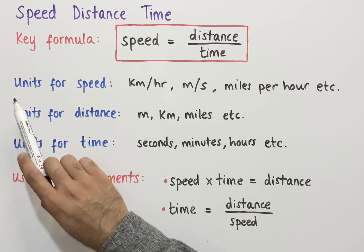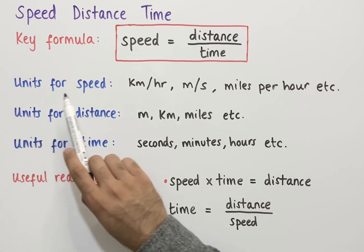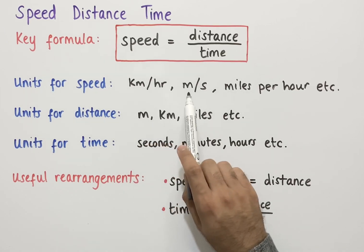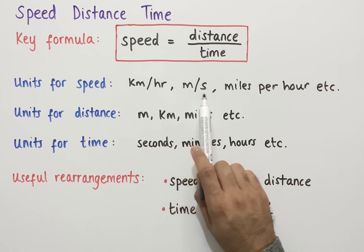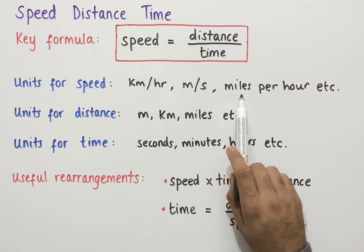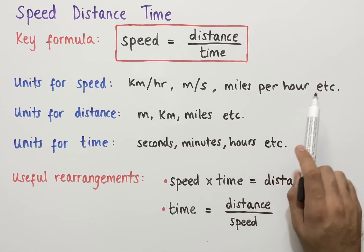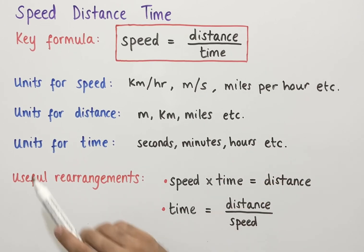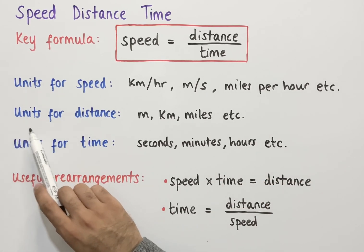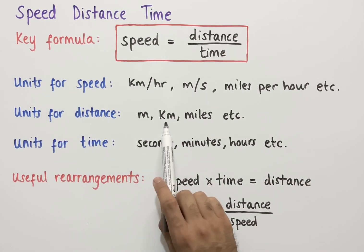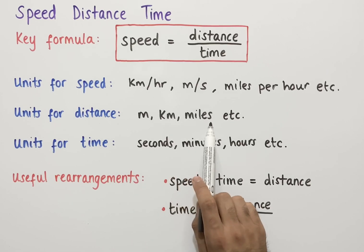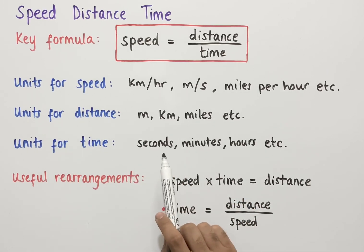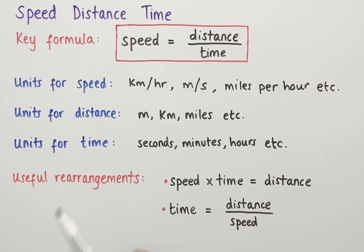Some common units for speed that we might encounter are kilometers per hour, meters per second, and miles per hour. Similarly, units for distance could be meters, kilometers, or miles, and units for time could be seconds, minutes, and hours.